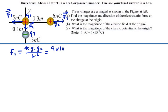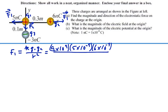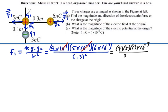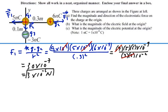So that will be 9×10⁹ times q1, 5 nanocoulombs (5×10⁻⁹), times 6 nanocoulombs (6×10⁻⁹), over the distance between them, 0.3 meters, squared. The 10⁹ and 10⁻⁹ terms cancel, giving us 3×10⁻⁶ newtons. That force on the charge at the origin will be going to the left.